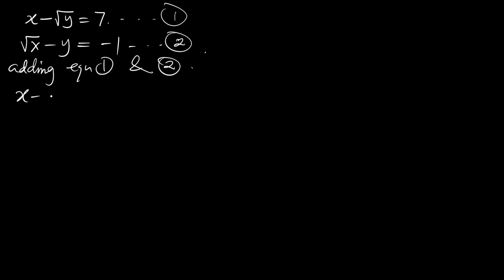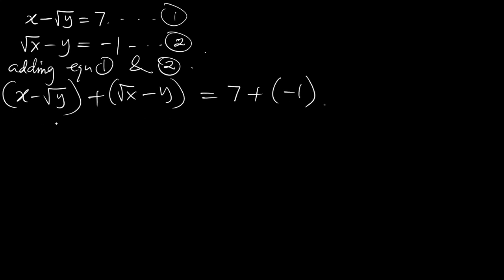Now adding equation 1 and equation 2 together. You now have x minus the square root of y plus the square root of x minus y equal to 7 plus minus 1. So now we rearrange this — take the non-rational numbers together and the radical numbers together. The result is equal to 6.